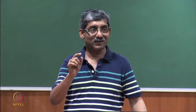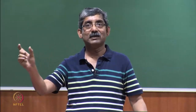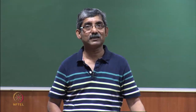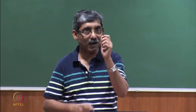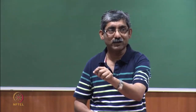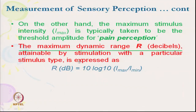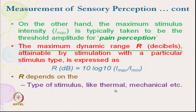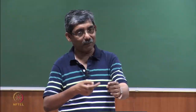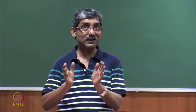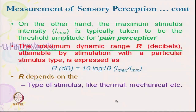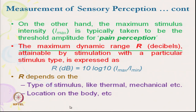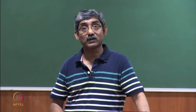For a particular sensation of a person, what is the minimum and maximum sensation limit can be expressed in terms of R, the dynamic range. Suppose something is pressing — at what point I start sensing, and up to which point I am able to bear that — that range is called dynamic range. R depends on the type of stimulus, like thermal or mechanical, and also on the location of the body depending on the type and number of sensors.